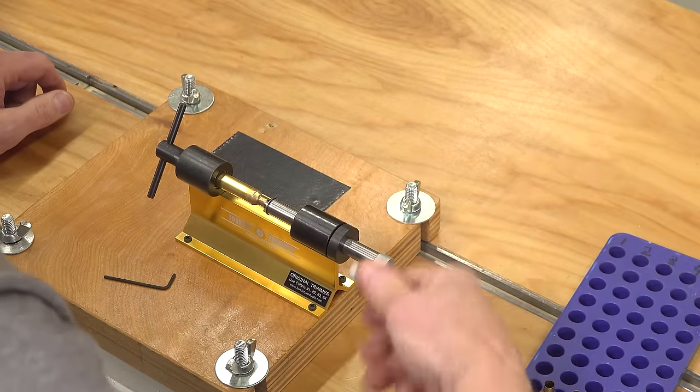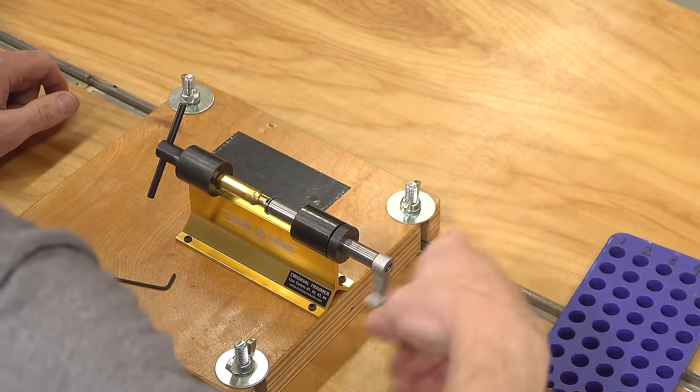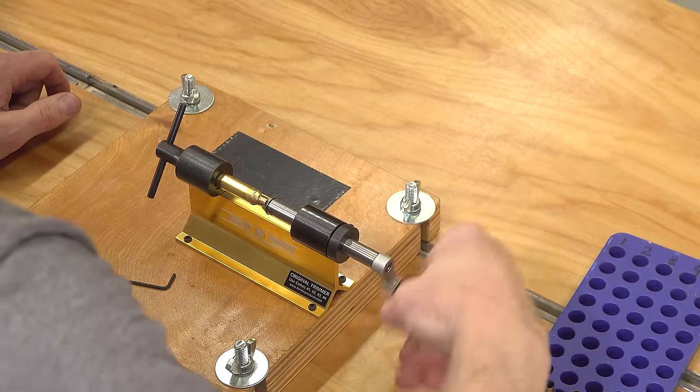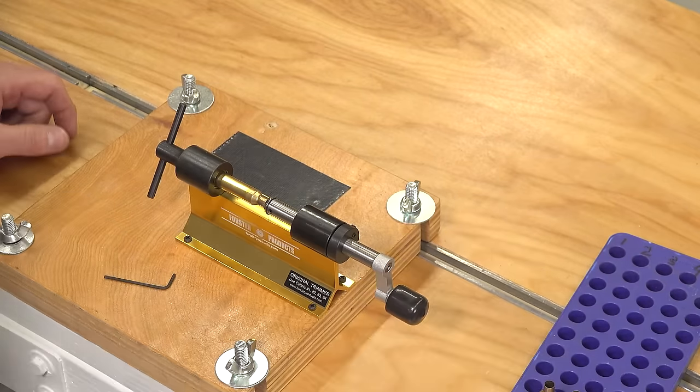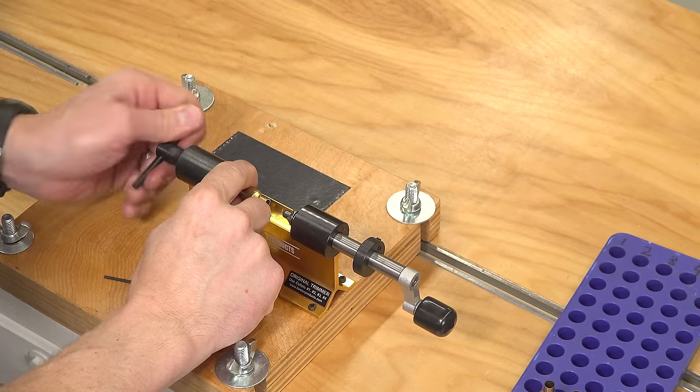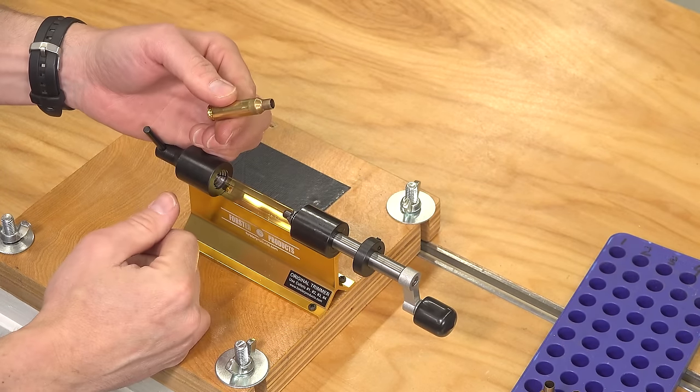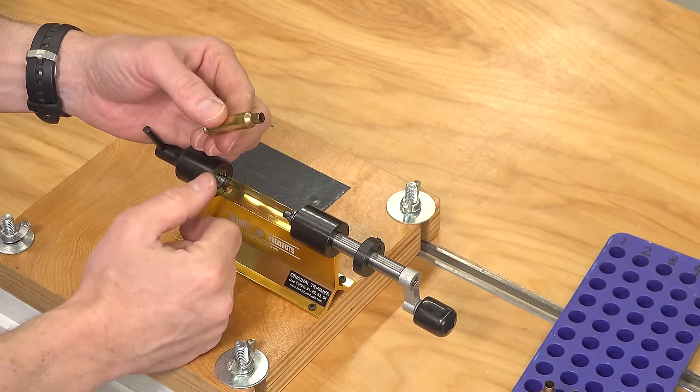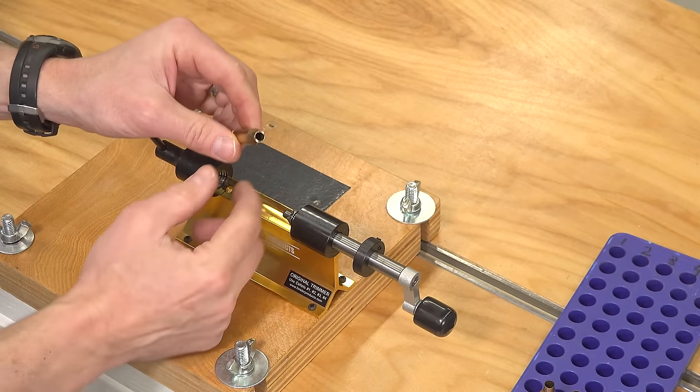Now we're going to spin the cutter and we're going to see a bit more material come off. What I like to do is I like to take the trim to length as specified for each particular cartridge, each case, and subtract about ten thousandths of an inch just so that you have a little bit of room to grow.